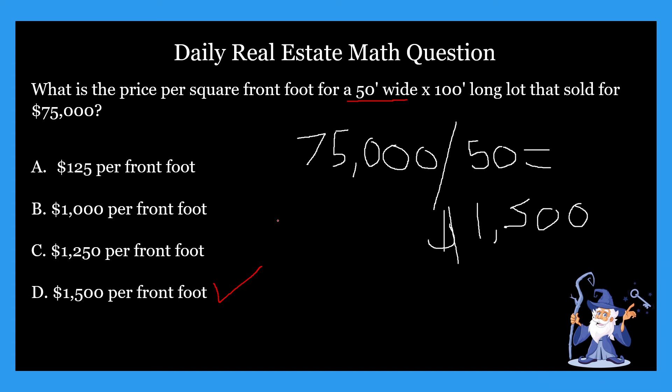I'm going to be doing another one of these problems tomorrow, so stay tuned for that. If you want, leave a comment down below. This is probably the most complicated math problem we've done yet in this series, just in terms of having to think about what's at the front of the house to figure out which number to use. Hopefully you enjoyed it — any comments or questions, leave them below. If you're new to the channel, please consider subscribing. We do videos all the time about real estate exam related stuff. Thank you so much for watching. This is Zach from realestatelicensewizard.com — make today magical. I'll see you guys next time.